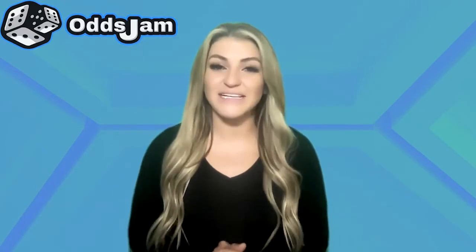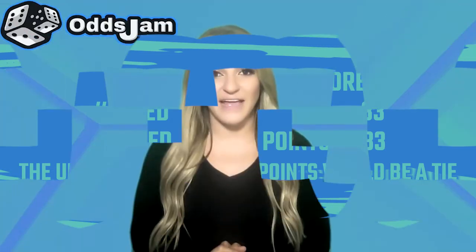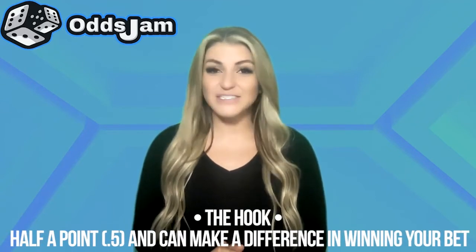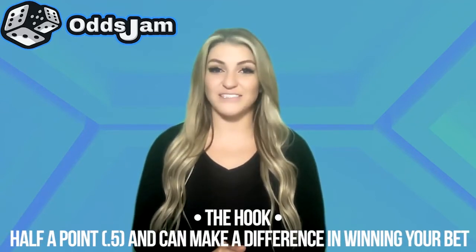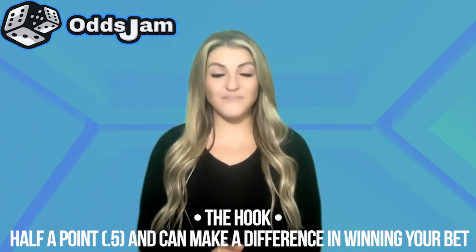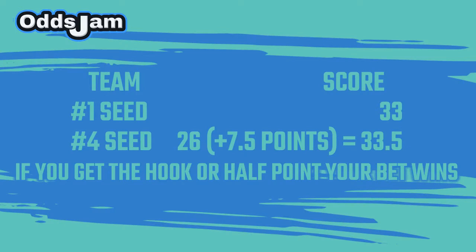You are basically predicting the outcome of the game. Let's say from the eye test you say the one seed is going to win 33 to 26. So if the bookmakers are giving you seven points — which is plus seven — then you would push at the end of that game. Now this is where the hook comes in. A hook is half a point, or 0.5.